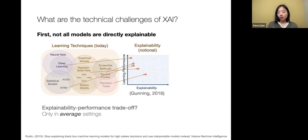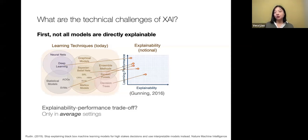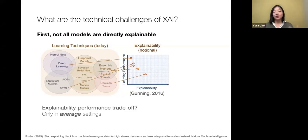Not all machine learning models are directly explainable. On one side you may have relatively simple, intuitive models like a decision tree or linear model, but they tend to not perform as well. On the other side, people have started using complex deep learning — deep neural networks or ensemble trees — which are complex, lack transparency, and don't follow a human-understandable intuitive process. This is what's called the explainability-performance trade-off. However, this only holds in average training settings — if you have well-structured data and meaningful features, you can achieve good performance using simpler algorithms.